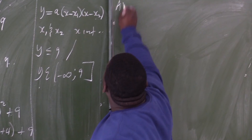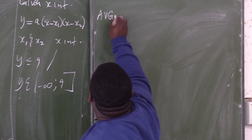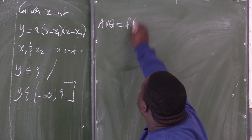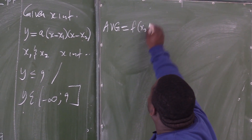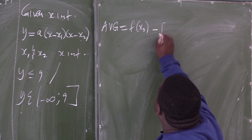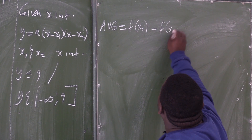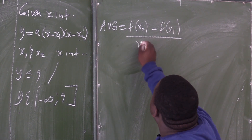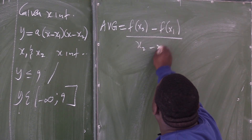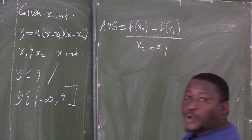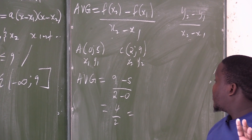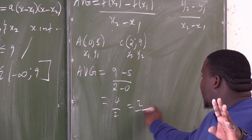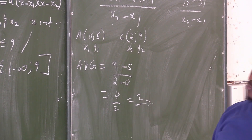Find the average gradient. Now, the average gradient is the same as f at x2 minus f at x1 over x2 minus x1. What is the average gradient here? It's 2.